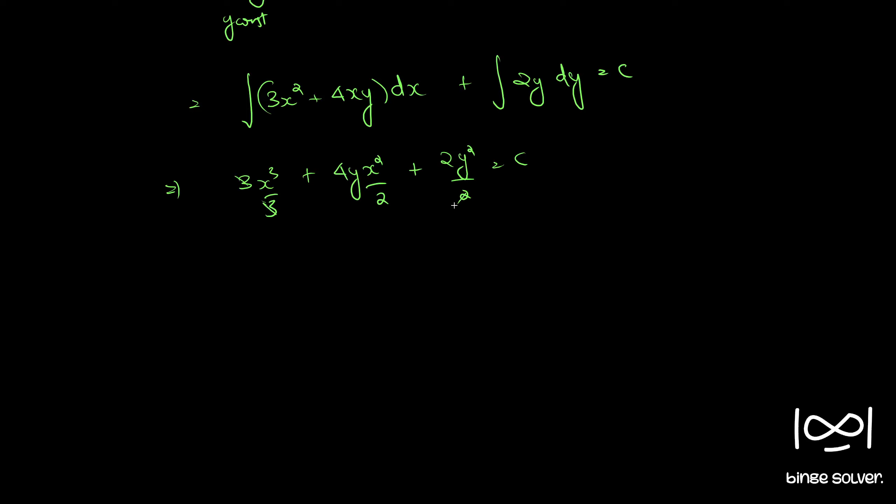The 3s cancel, the 2s cancel. Final simplification gives: x³ + 2x²y + y² = c.